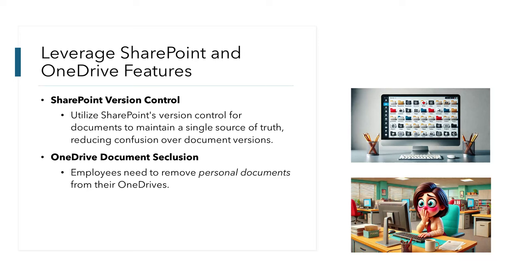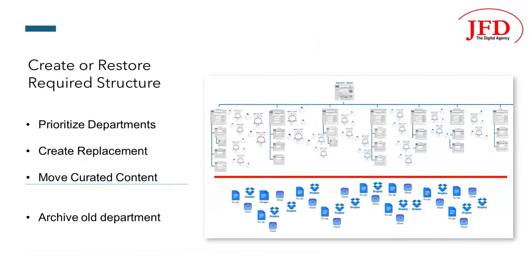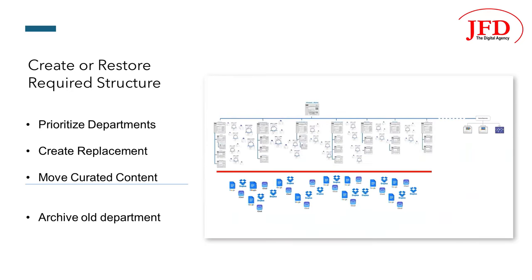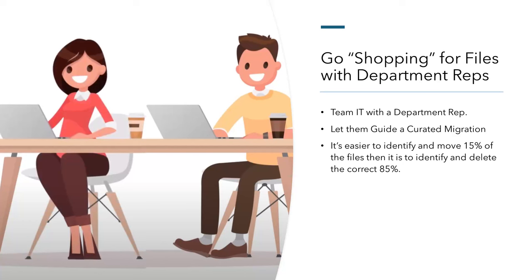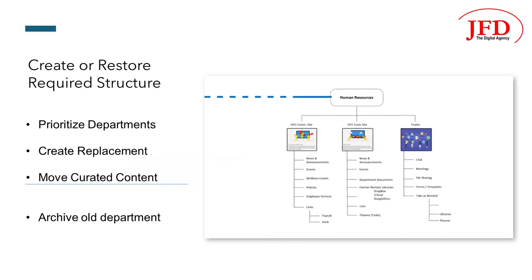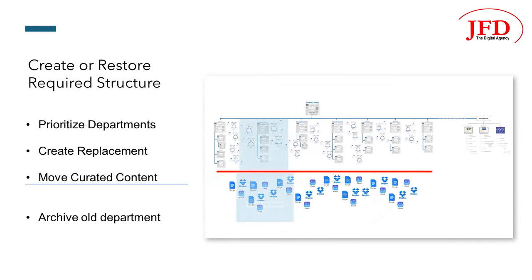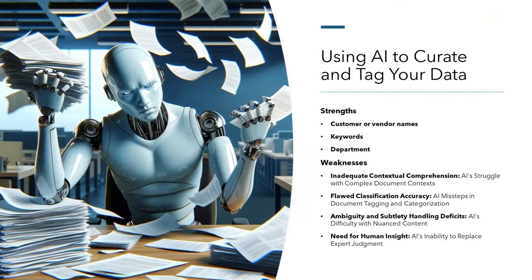The strategy will also need to clarify that employees need to remove personal documents from their OneDrive, or they risk Copilot including them when developing analysis and recommendations. Next, you'll need to update your intranet to facilitate secure, consolidated document management. Most organizations are prioritizing their departmental SharePoint sites and recreating them one at a time, then moving their newly curated documents into them. This is often done collaboratively involving IT staff and a departmental representative familiar with the documents. After the new department site is created and populated, the old version is set to read-only before being ultimately archived. Grooming documents in new libraries can be made easier by using AI to provide keywords and metadata, though the process still requires human intervention because of how AI handles ambiguity and context.